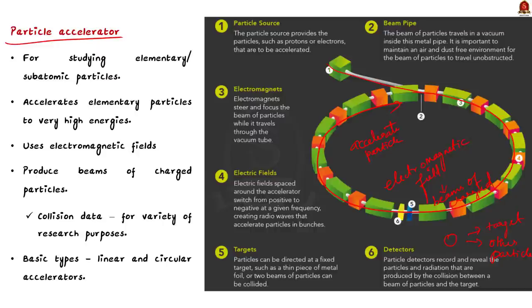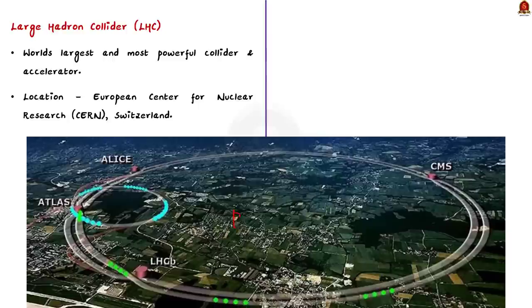When accelerators generate head-on collisions between particles, they are called colliders. There are two basic types of particle accelerators: linear accelerators, which propel particles along a straight beam line, and circular accelerators, which propel particles around a circular track. The Large Hadron Collider mentioned in the news article is a particle accelerator. As its name suggests, it is a collider, and it is the largest and most powerful collider and accelerator in the world.